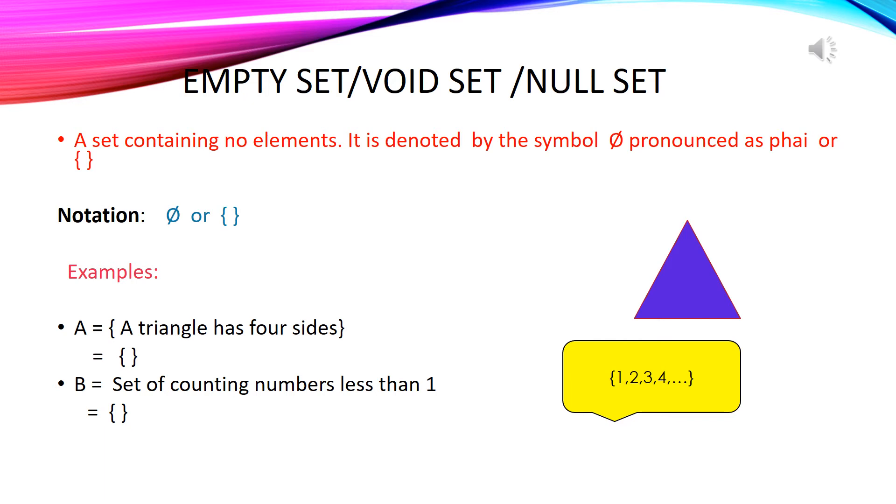We can define it as a set having no element is known as an empty set, null set or void set. An empty set is denoted by a pair of curly brackets with no elements in it or by the symbol phi.